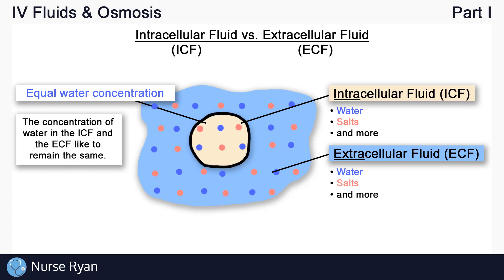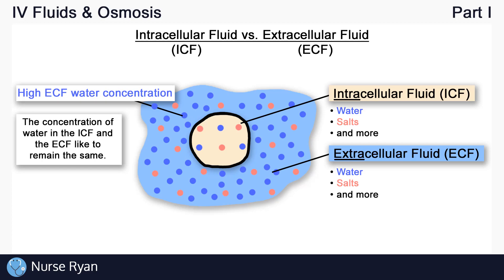It's really important to note that the intracellular and extracellular fluids like to keep a nice balance between each other, especially with water — water really likes to stay at consistent concentrations. Right now there's an equal concentration of water on the inside as on the outside: for every one unit of salt, there is one unit of water. But what happens if we add a lot more water to the extracellular fluid without adding any more salt? Now for every one unit of salt in the extracellular fluid, there's more than one unit of water, increasing the water concentration outside the cell.